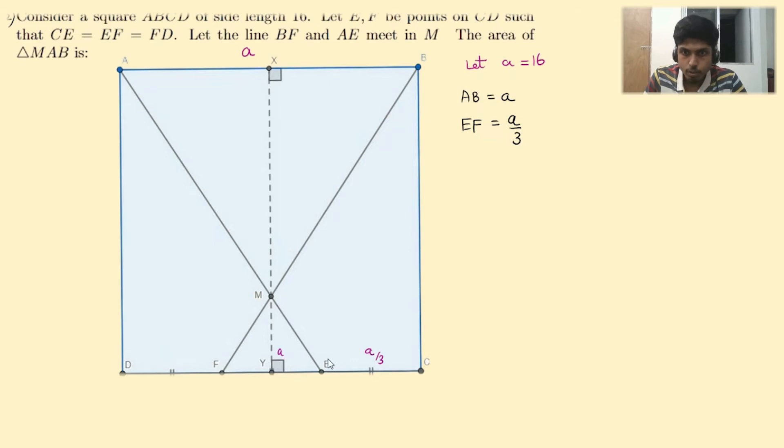Let me erase it for now because we are now going to angle chase. Angle MEF equals angle MAB because AB is parallel to EF. And angle MFE equals MBA for the same reason. And again, the angle at M are vertically opposite, hence they are also equal. So we get that triangle MEF is similar to triangle MAB by angle, angle, angle similarity.